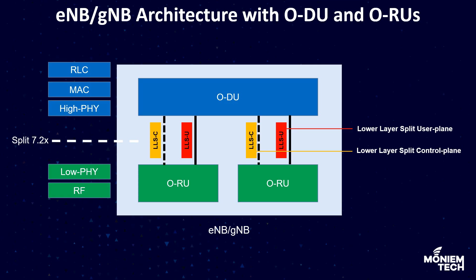This image is very important to understand. The architecture of eNodeB or gNodeB in OpenRAN has two entities: something called ODU and ORU, and also some definitions associated with them.